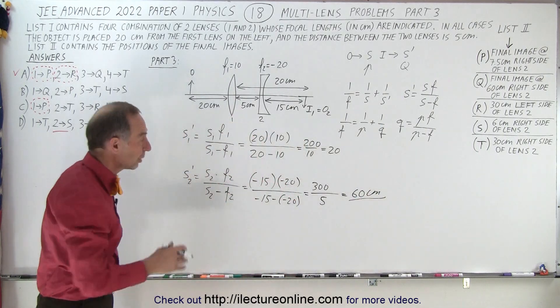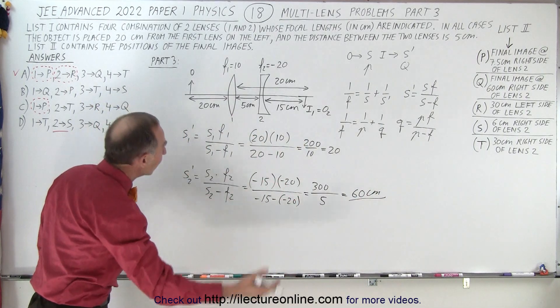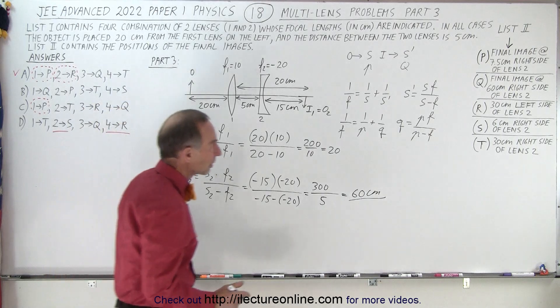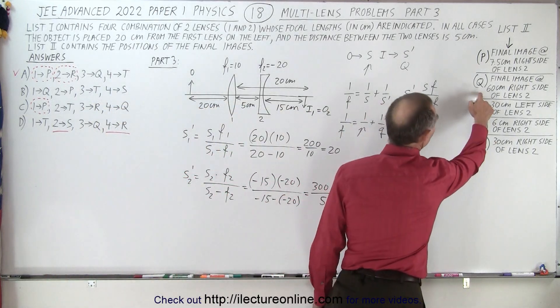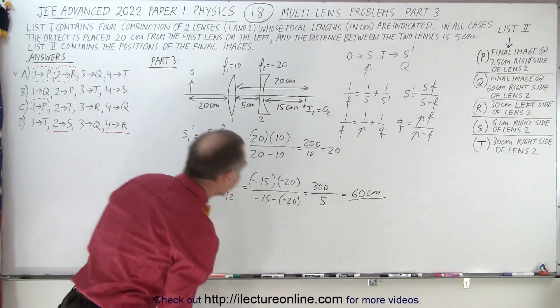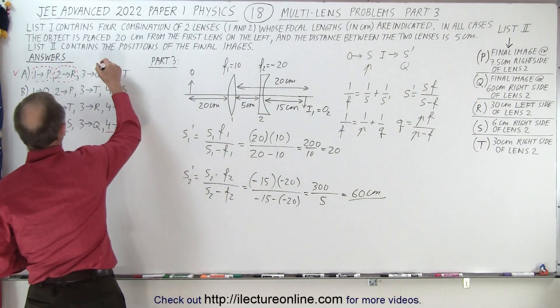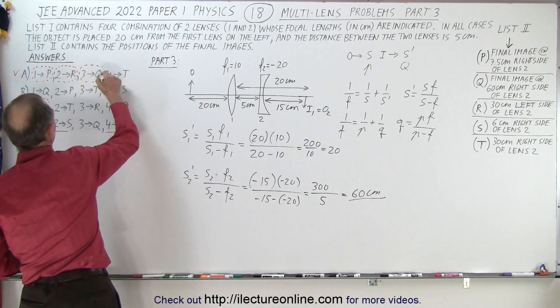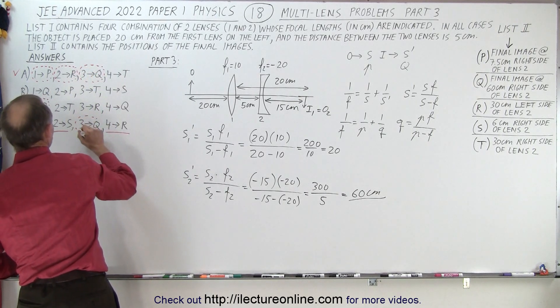Which means that image 2 is 60 centimeters to the right of lens 2. Is that one of the answers? Sure enough, right here Q, final image is 60 centimeters to the right of lens 2. And so therefore for the third part, Q is correct. So this is the correct one right here, and this is correct right here.